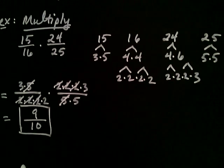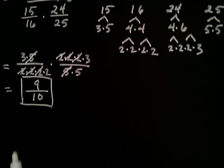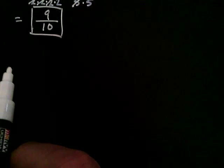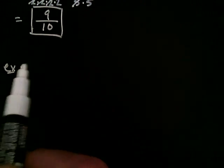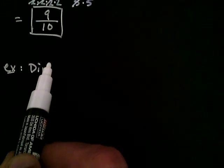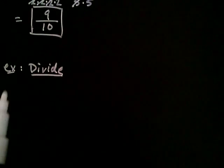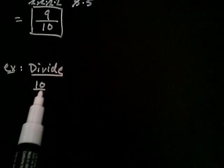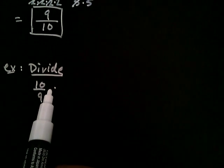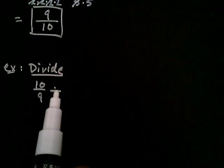Now what happens if you want to divide two fractions? Now dividing two fractions happens to be defined in terms of multiplication. And let me show you what I mean. So let's say you're asked to divide. Let's go with ten over nine divided by six over nine.